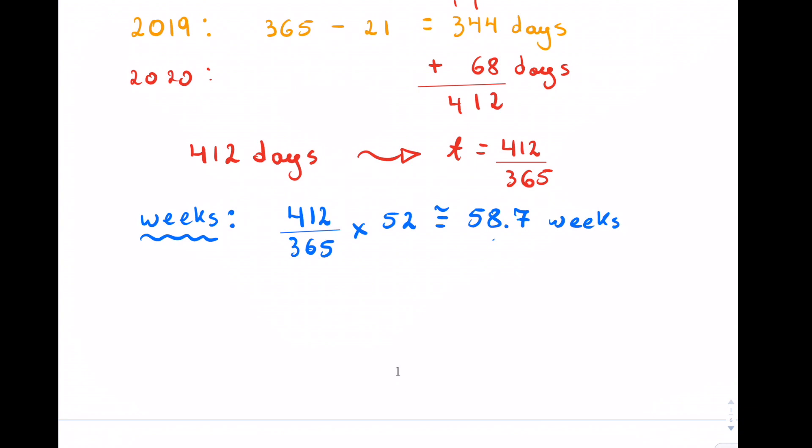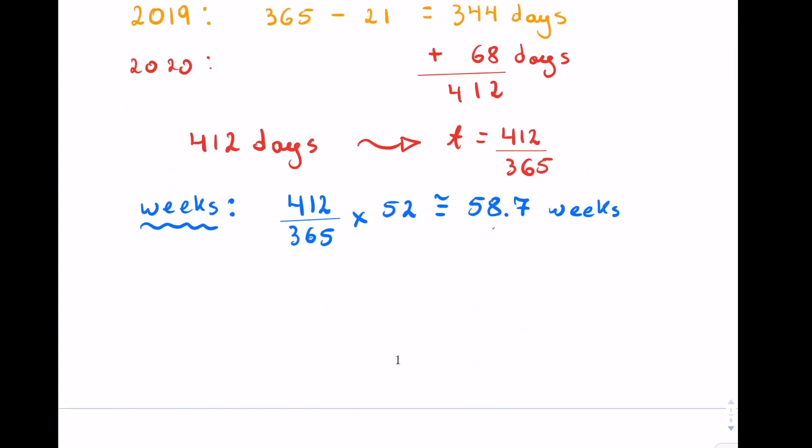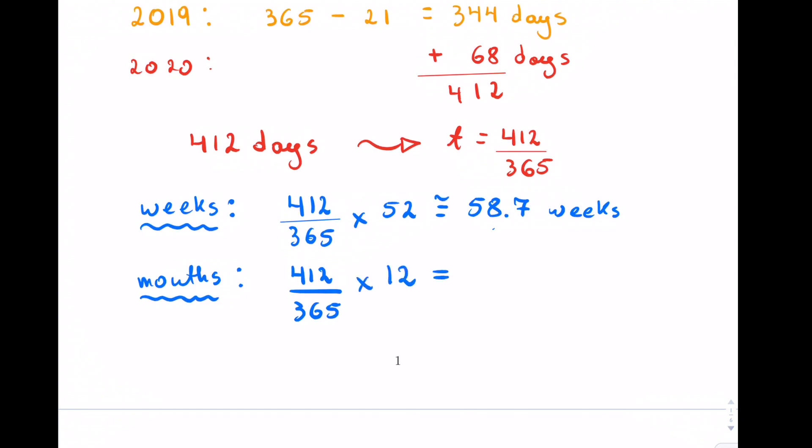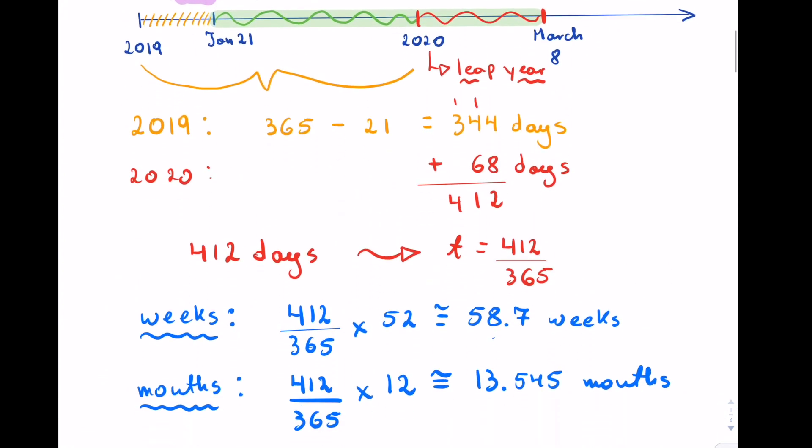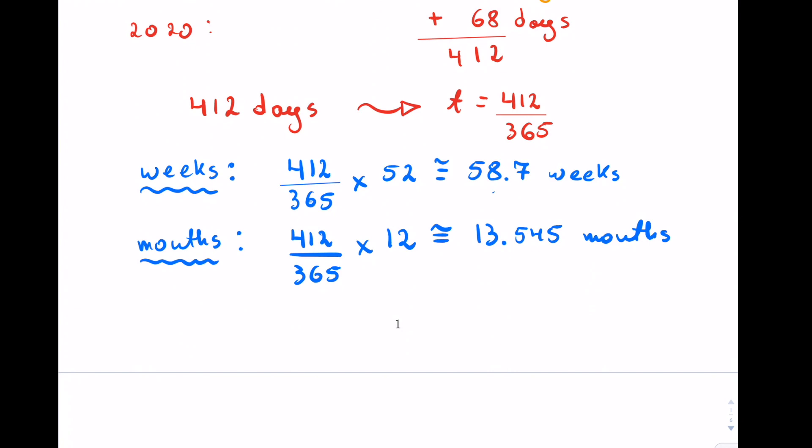They also ask us how many months. Probably the easiest as you're doing these is always take the number of years and then you can calculate how many months by multiplying by 12. So that's going to be 13.545, approximately 13.5 months or a little bit more.